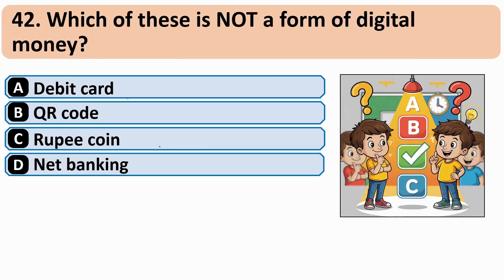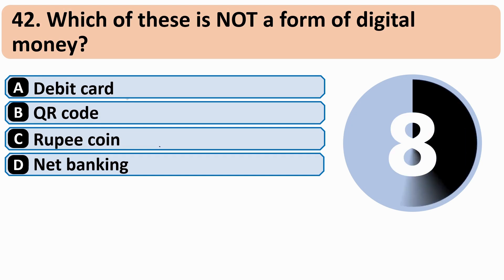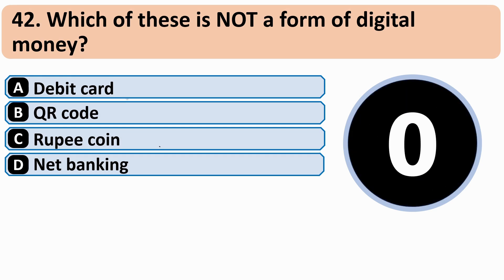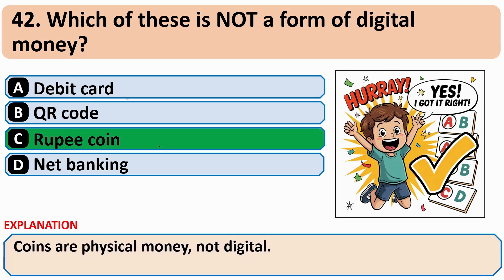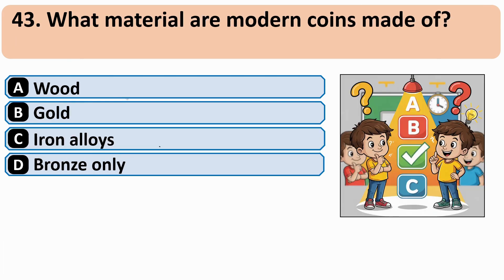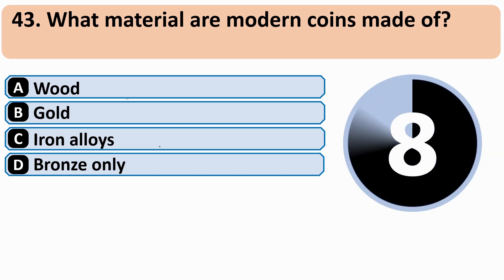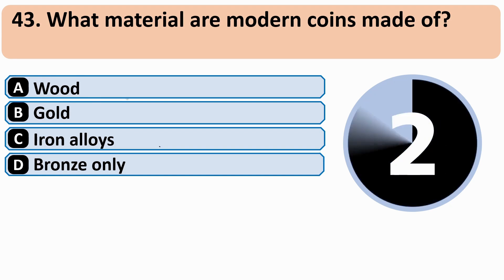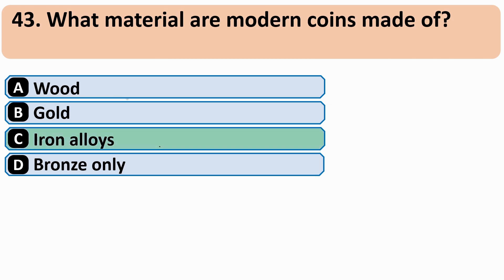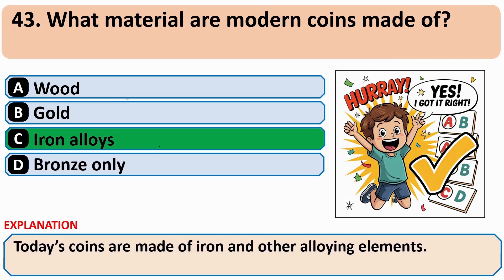Which of these is not a form of digital money? The correct answer is C — Iron Alloys.